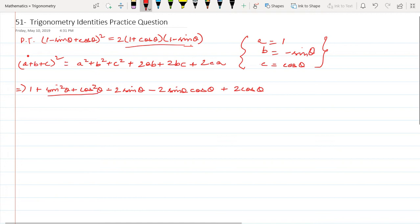Okay, and you see this sin square theta plus this cos square theta will become a 1 and it will become 1 plus 1 minus 2 sin theta minus 2 sin theta cos theta plus 2 cos theta.